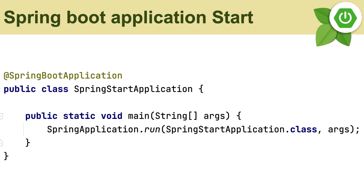Once the Spring project is created, you'll see a Spring Boot application annotation — @SpringBootApplication — on a class called SpringStartApplication, which has a main method. The main method is the starting point of any Java program, and here it calls SpringApplication.run(SpringApplication.class, args) to start our Spring application. This is the initializer of the whole application.